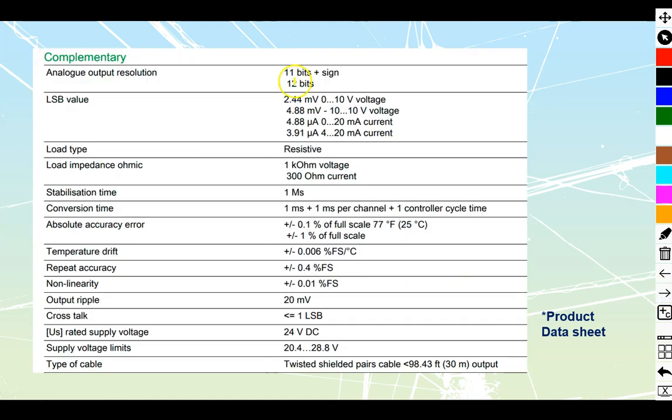Looking a little bit further in, we find information about the accuracy or resolution. It's going to be 12 bits of accuracy - 11 bits plus a sign, plus or minus. It's going to be a little bit more coarse than what we can get on the input. Inputs range up to 16 bits. These are going to be slightly coarser because we're applying that output.